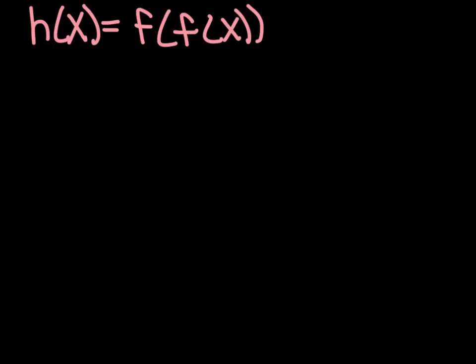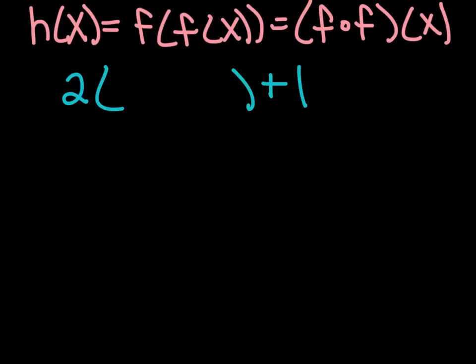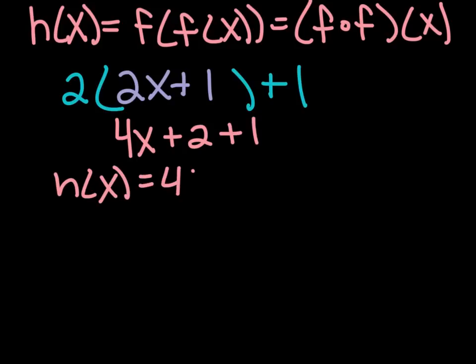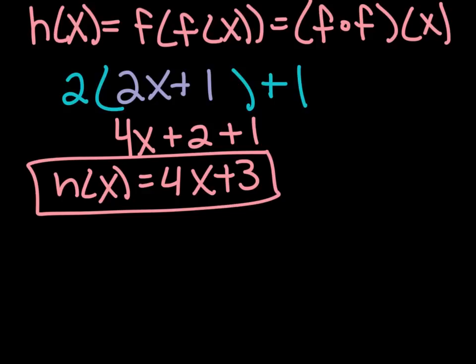Here's a tricky one for you. Now I want to find f of f of x, and of course that could also be written f circle f of x. That means I'm going to plug the f function into the f function. Remember the f function was 2x plus 1. So I've got 2x plus 1, and then I'm going to plug in 2x plus 1. I'm plugging it into itself. If I do that math, 2 times 2x is 4x, 2 times 1 is 2. So now that h of x is 4x plus 3.